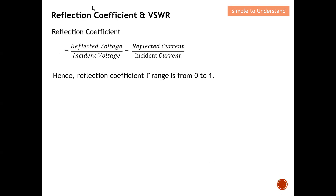Let's do a very quick recap on Refraction Coefficient and also VSWR. The Refraction Coefficient is calculated as the refracted voltage over the incident voltage, or the refracted current over the incident current. The incident wave is basically the source and the refracted wave is basically the load. There is no chance that the incident wave is actually smaller than the refracted wave — the refracted wave can be equal to but cannot be bigger than the incident wave.